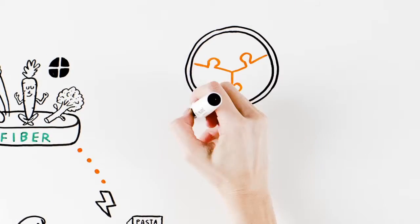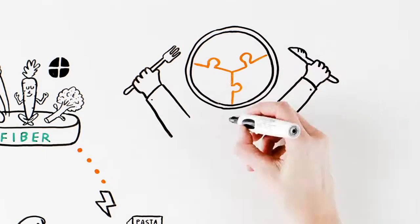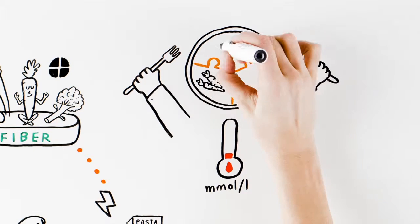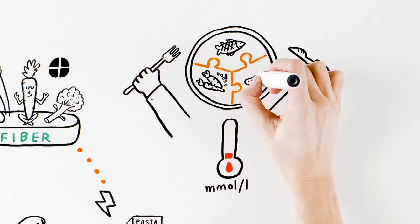The composition of your meal also affects your blood sugar. If you consume fiber, protein, and fat together with carbohydrates, your blood sugar goes up more slowly.